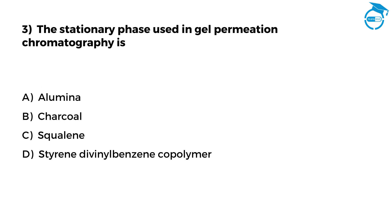The next question is: The stationary phase used in gel permeation chromatography is. Option A, Alumina. Option B, Charcoal. Option C, Squalene. Option D, Styrene Divinyl Benzene Copolymer. Mention your answer in the comments. You have got 7 seconds.